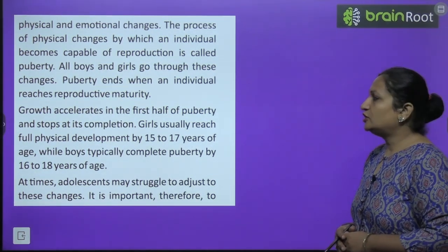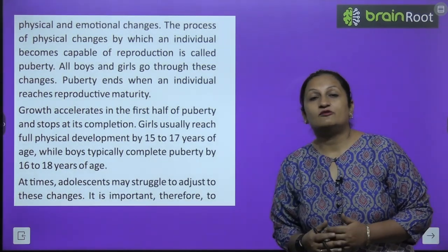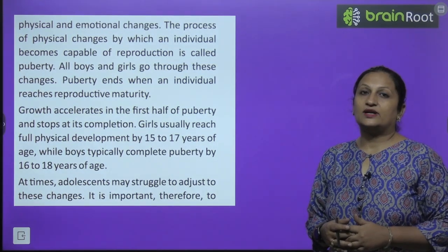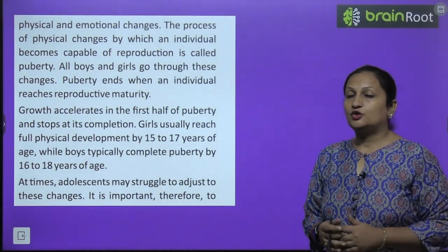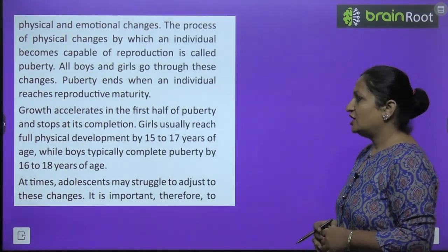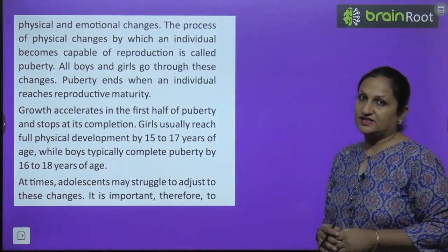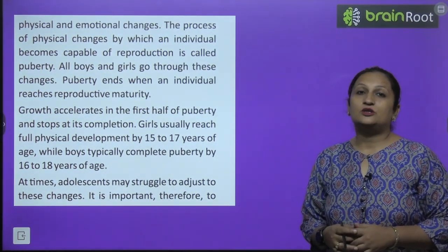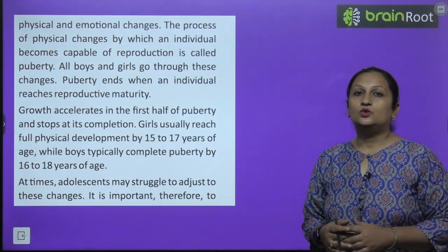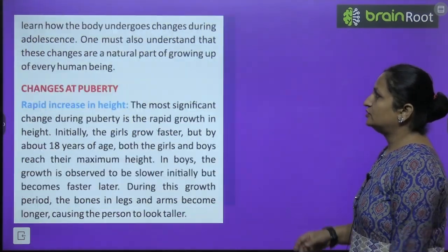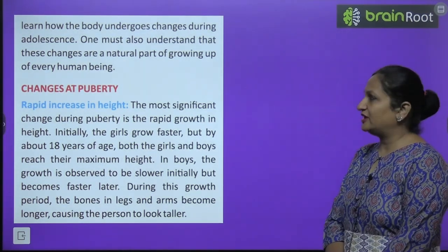Girls usually reach full physical development by 15 to 17 years of age. The reproductive stage of girls begins on the onset of periods, called menarche. Boys typically complete puberty by 16 to 18 years of age. At times, adolescents may struggle to adjust to these changes and need guidance from their parents. It is important to learn how the body undergoes changes during adolescence, and one must understand that these changes are a natural part of growing up.